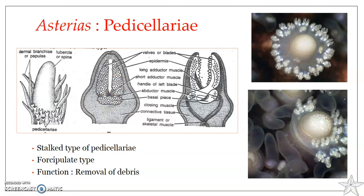The two articulating calcareous plates are referred to as the valves or blades. These are movable, and they rest upon another calcareous plate. The two valves or blades articulate and rest upon the basal piece or basilar piece, which is the third calcareous plate of the pedicillariae.